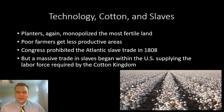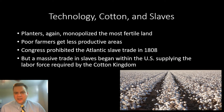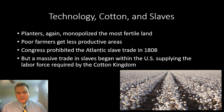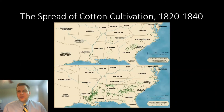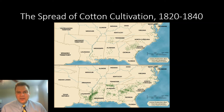The unintended consequence of Eli Whitney's cotton gin was that it revived slavery. Before the invention, slavery was slowly dying out. But with the cotton gin, the need for slave labor in the South grew exponentially. Rich planters took the most fertile land, mirroring what had happened with tobacco, and the institution of slavery was dramatically expanded to meet the labor demand of cotton production.